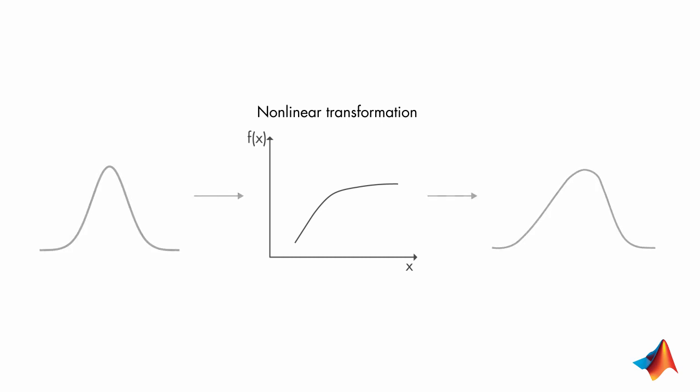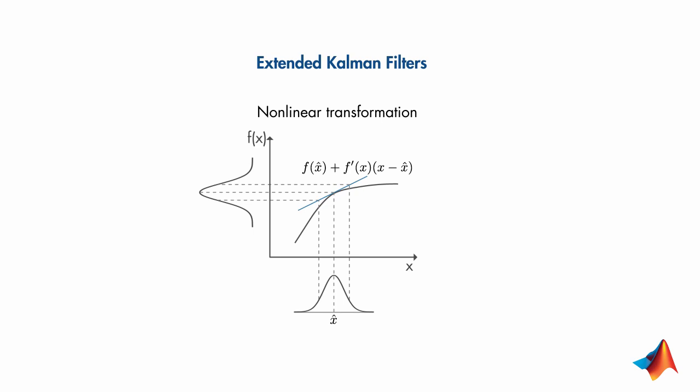In this case, you can implement an extended Kalman filter which linearizes the nonlinear function around the mean of the current state estimate. At each time step, the linearization is performed locally and the resulting Jacobian matrices are then used in the prediction and update states of the Kalman filter algorithm.